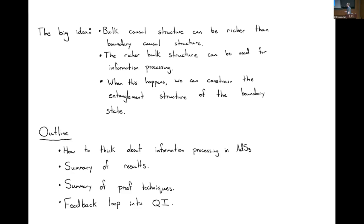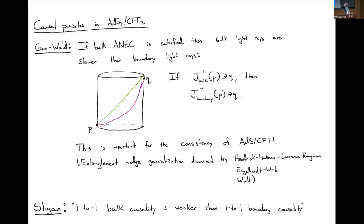I'll start by telling you how to think about information processing in AdS3 — I'm only going to talk about three dimensions today for technical reasons. I'm going to summarize all of the things that we know how to prove, tell you what I think about them, and how we should interpret them. Then I'll indicate the kinds of techniques we use to prove these theorems. Finally, I'll tell you something really interesting: we can feed back the work we've done in AdS/CFT into quantum information theory to conjecture new theorems that we can prove without any reference to gravity.